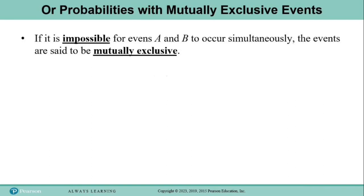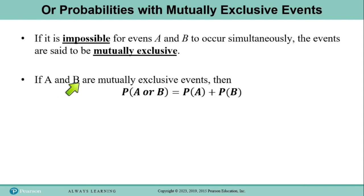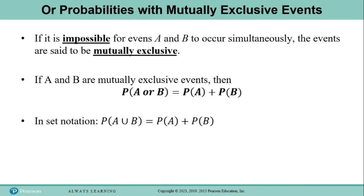Now let's talk about OR probabilities with mutually exclusive events. If it is impossible for two events A and B to occur simultaneously, we say they are mutually exclusive — if one happens, the other cannot happen at the same time. For mutually exclusive events, P(A or B) = P(A) + P(B). We can calculate the two probabilities separately and add them together, similar to how disjoint sets work in Chapter 2.